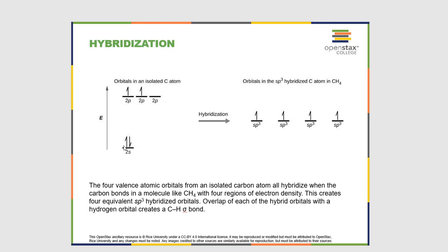Why three-quarters of the way up? Because three out of four are p orbitals, so the energy is about three-quarters of the way up. This is essentially what hybridization is. I want to explain a little bit more about why hybridization occurs, then look at the results of hybrid orbitals, and finally how do you figure out what the hybridization is if you have a Lewis structure. We're going to start with the theory first and then talk about the practical implications in a few minutes.